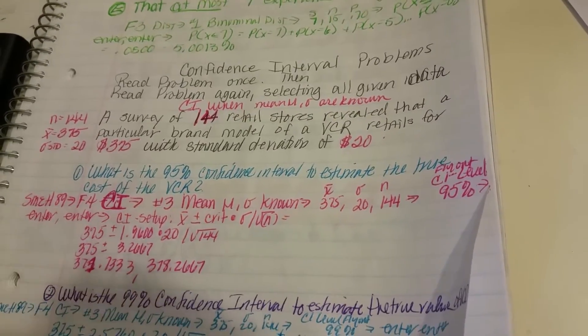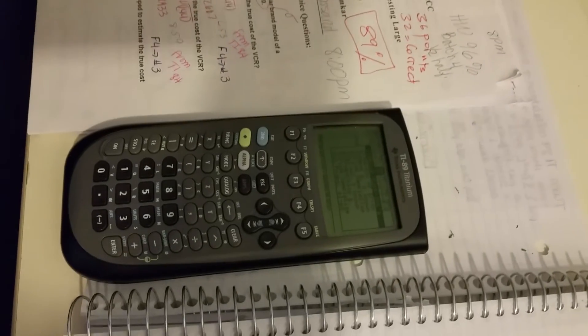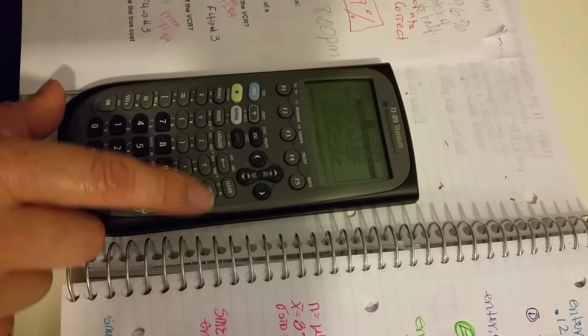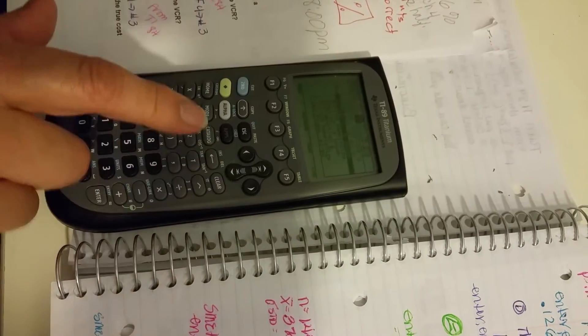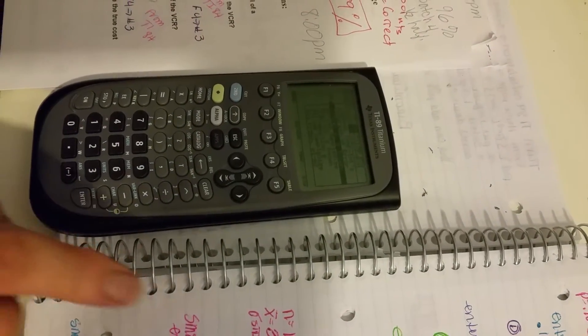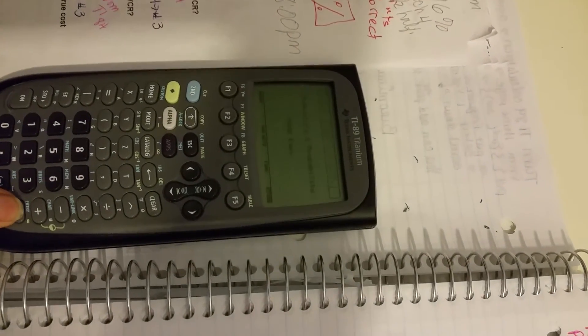So now we go down here. We already have our calculator in the distribution. We went to F4 and we're going to go to number three because we know the mean and the standard deviation is known. That's what's given in the problem. So we go to F4, number three, enter.